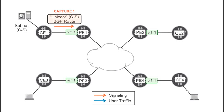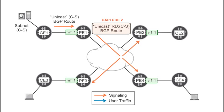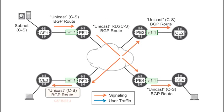PE1 receives the route in a VRF called VRF1. At this point, it needs to re-advertise the route in the context of the VPN it belongs to. The resulting prefix contains the route distinguisher of VRF1. PE1 sends it via multi-protocol internal BGP to the route reflector, which in turn sends the route to PE2, PE3, and PE4. The PEs receiving this route re-advertise it to their neighboring CEs using external BGP. This is how CE3 learns how to reach the unicast IP address of the customer source.